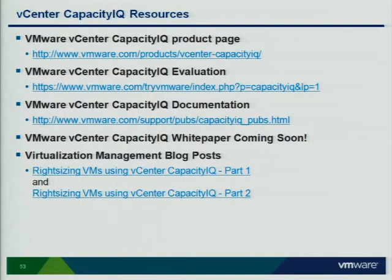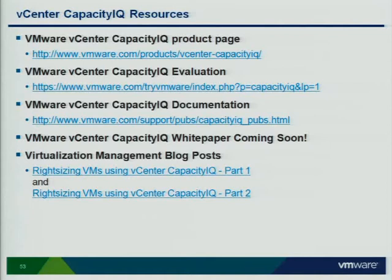The raw data is kept up to one year, and then when we roll it up, that's kept for 10 years. What's nice about what we chose is that it preserves that business week profile. Eventually we'll probably get into other profiles like typical month of the year. Capacity IQ has its own database and its own granularity because we need to maintain that granularity — the vCenter roll-ups are different. If you do roll-ups year over year, at least you have the trend lines for the previous year.